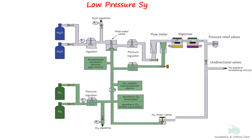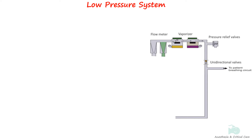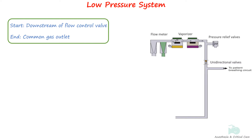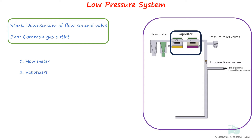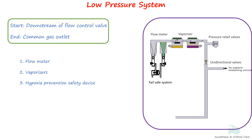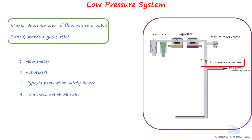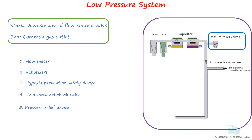The low-pressure system is located downstream of the flow control valves. The pressure in this system is slightly above atmospheric pressure and much variable. The system contains flow meters, vaporizers and their mounting devices, hypoxia prevention safety devices that automatically regulate flow of oxygen and nitrous oxide, unidirectional valves, pressure relief devices, and common gas outlet.